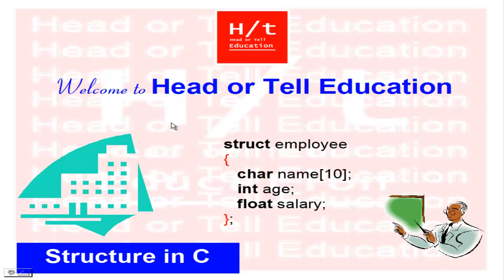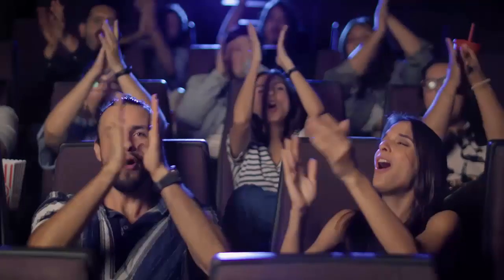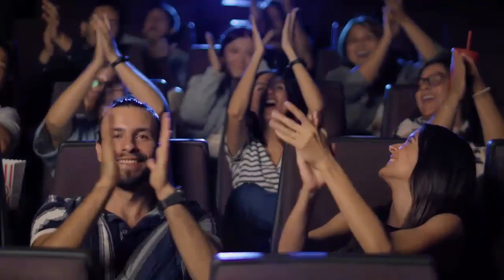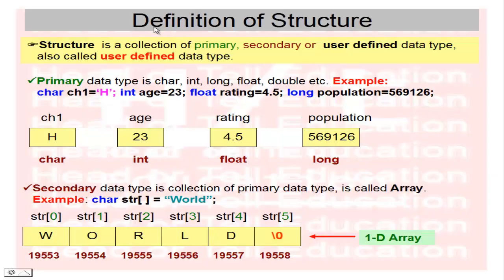Hello friends, welcome to Head Hotel Education. Today our topic is structures in C. First, what is the definition of structure? Structure is a collection of primary, secondary, or user-defined data types. Structure is also called a user-defined data type.